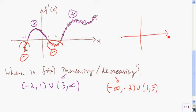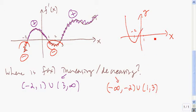Ignoring concavity, if we were to sketch a graph of f, we would see that it's falling from negative infinity to negative two, then growing from negative two to one, then it falls from one to three, and then it grows again from three to infinity. So this right here could be the graph of a function that has this derivative — just looking at the increasing and decreasing behavior.